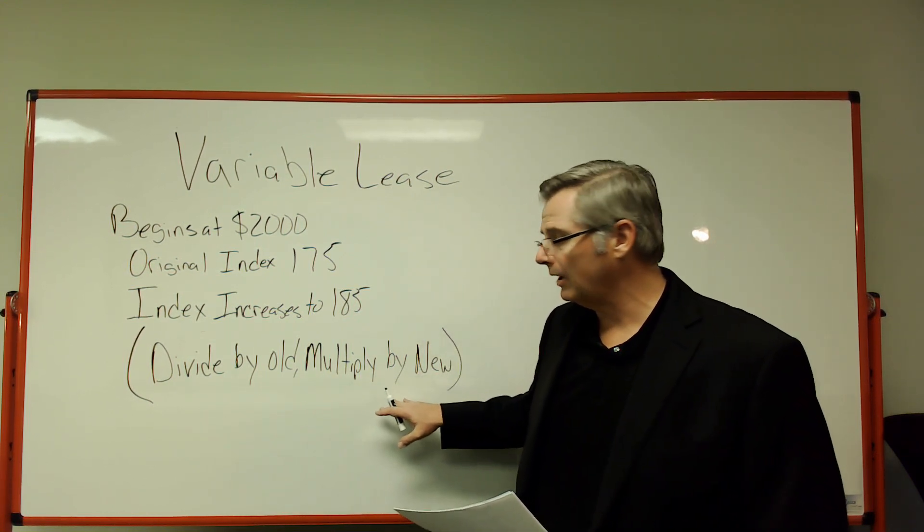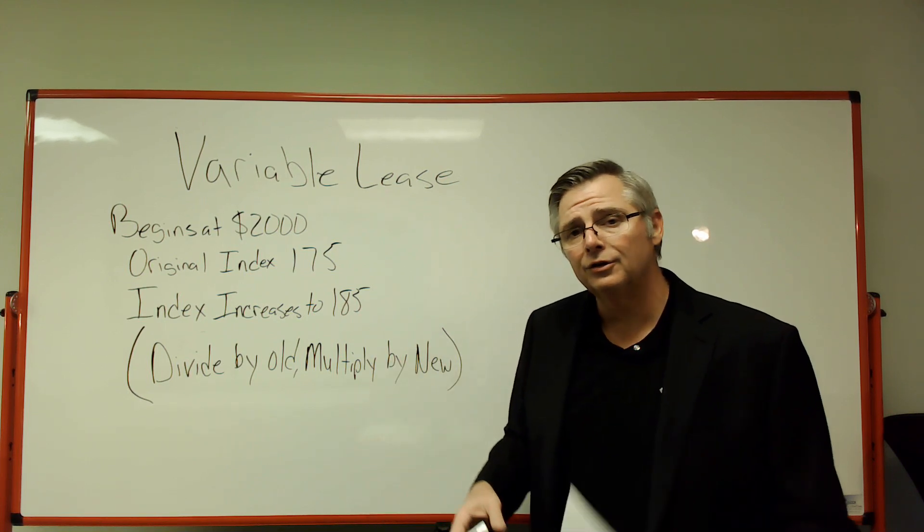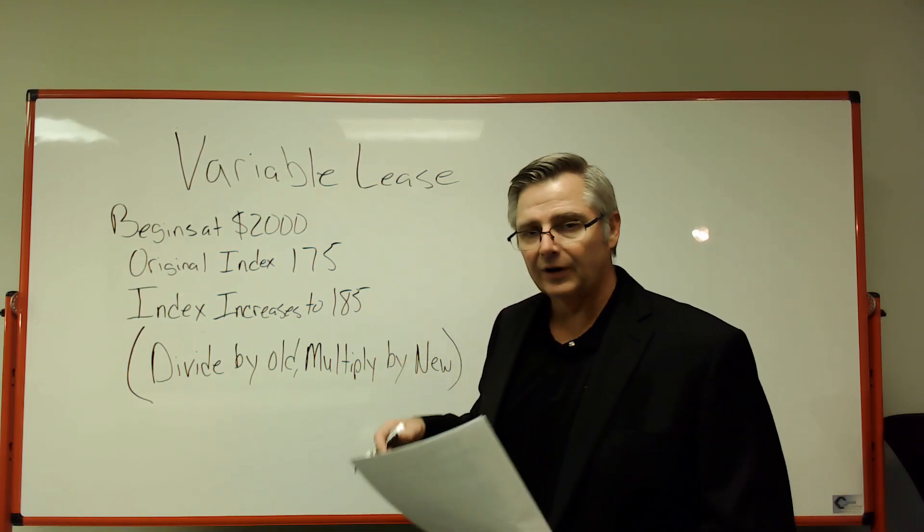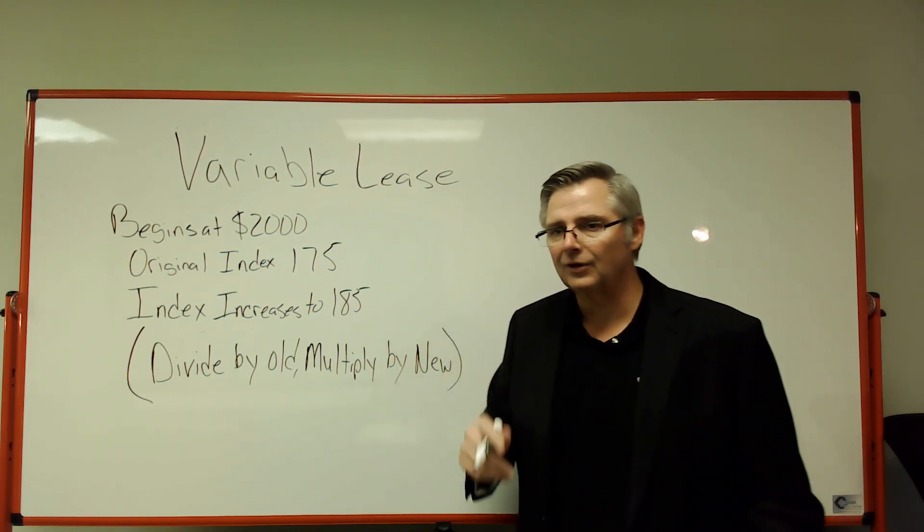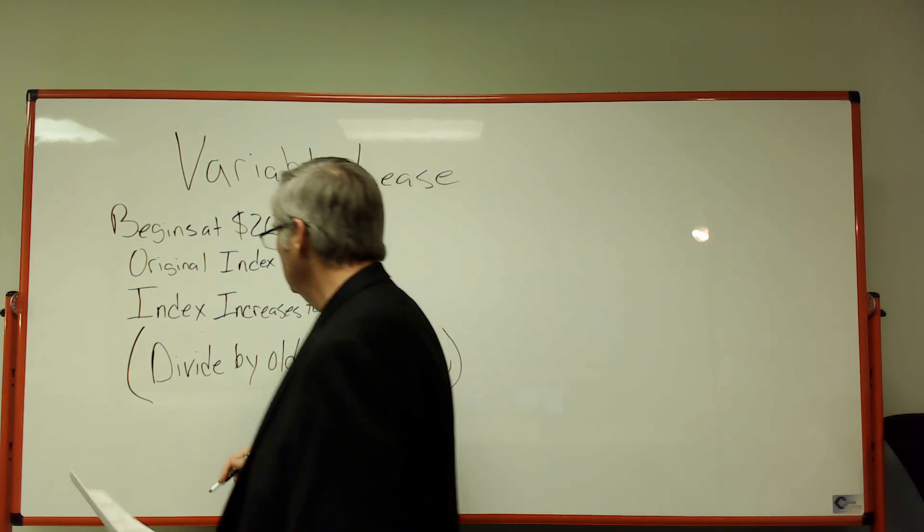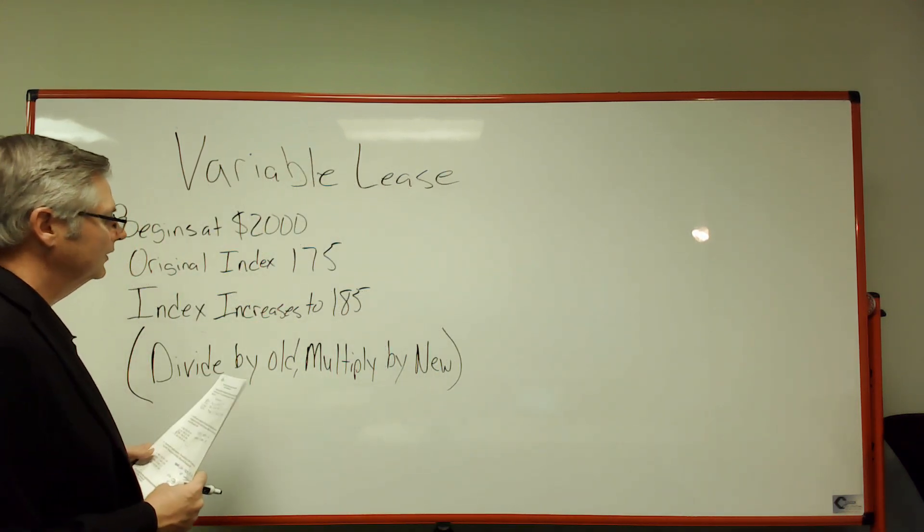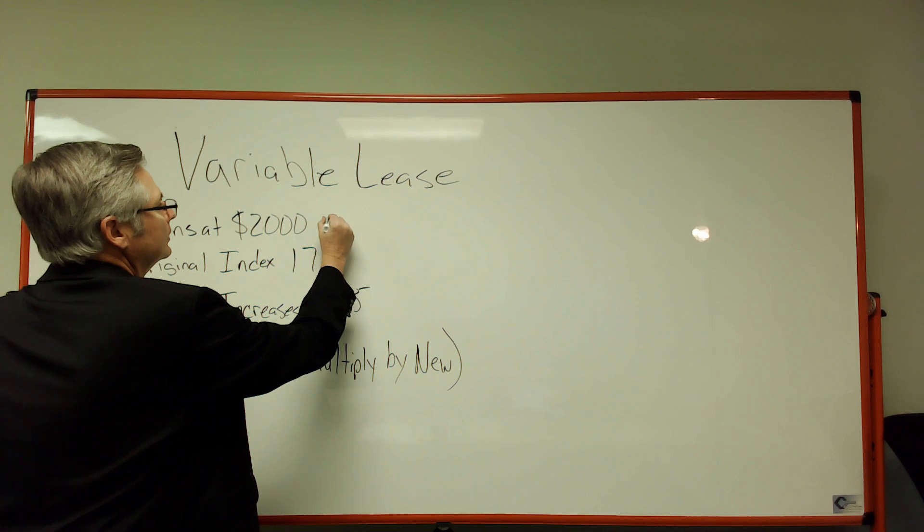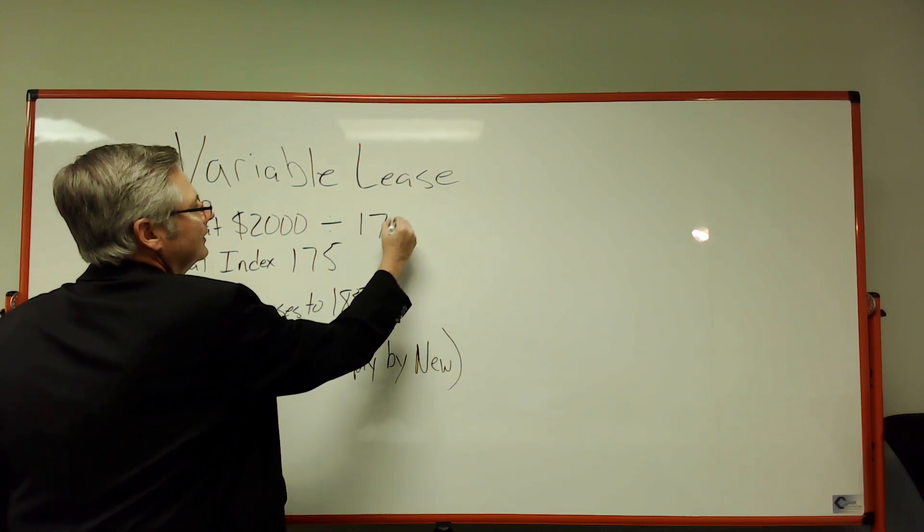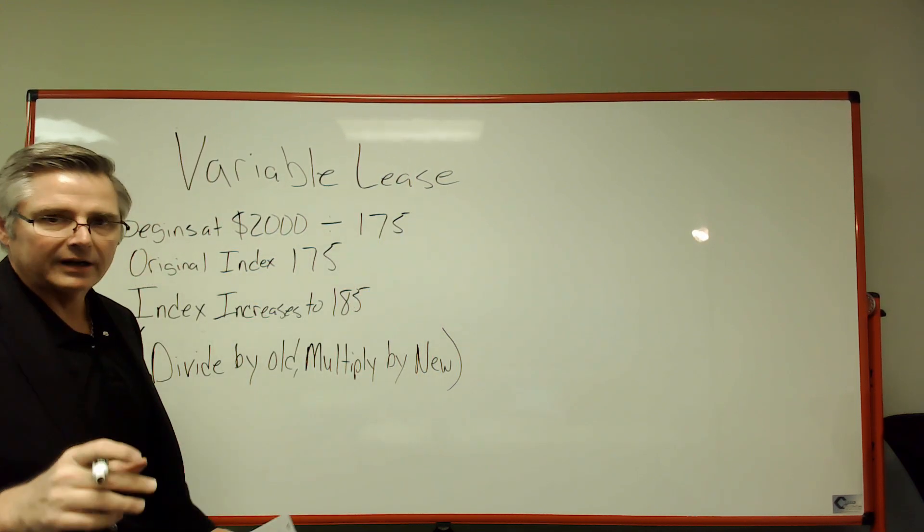And it will give you the new rent. Again folks, something I'm always saying: keep it simple, don't overthink this stuff. So if the rent starts at $2,000, we are going to divide by the old, which is 175. Now, you can put that in your calculator.